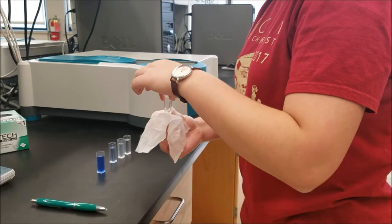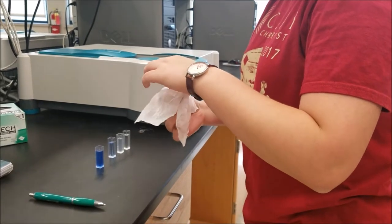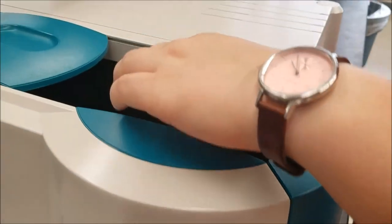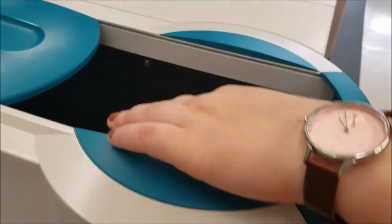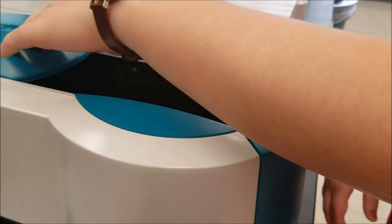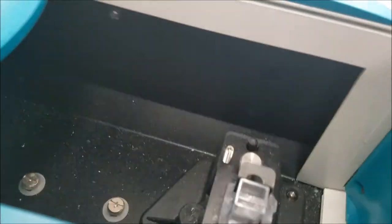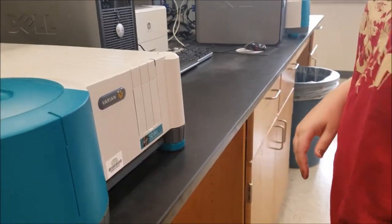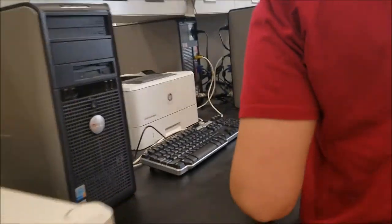When using the spectrophotometer, you must first zero the blank, in this case distilled water. You will clean two sides of the cuvette and place the two clean sides in the spectrophotometer on the side where the light shines through. Next, press zero on the computer. This step is necessary because it negates the water in each dilution, thereby allowing for an accurate reading of absorbance.